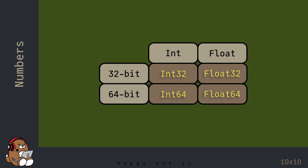When using integers and floating-point numbers, you have the option of using different bit sizes for those types. Julia offers several different bit sizes, but in this chapter I'll focus on 64-bit numbers and 32-bit numbers for illustration purposes.